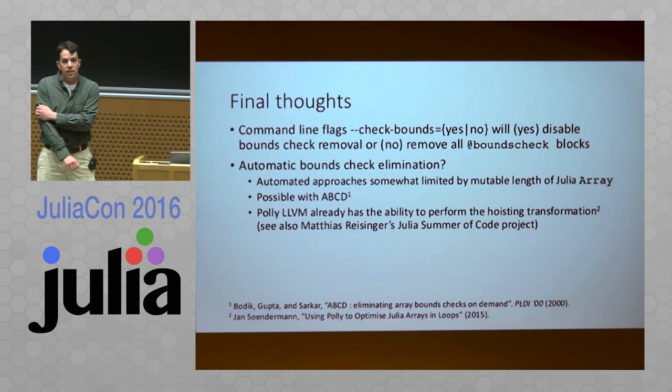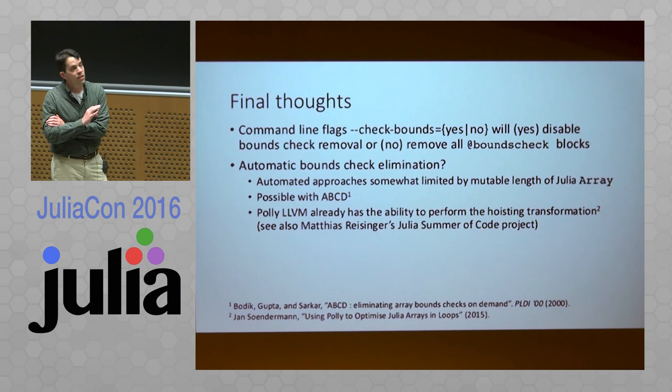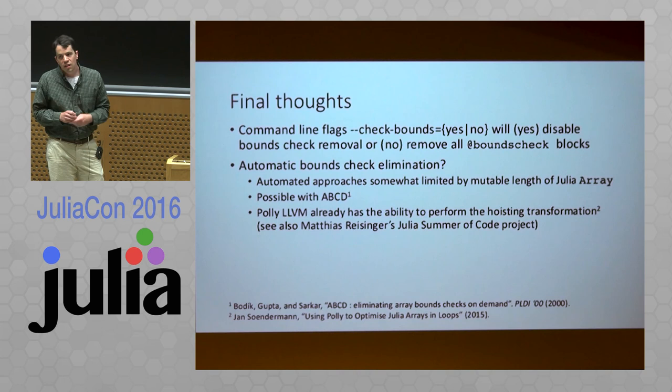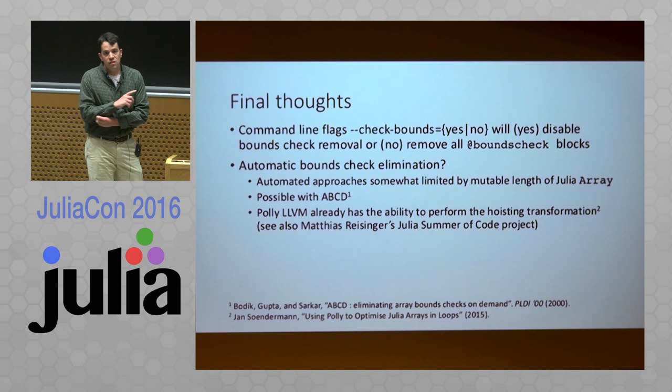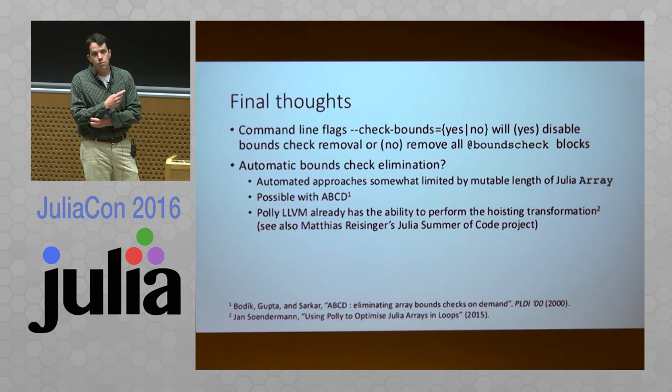Some final thoughts. There are command-line flags you can use to change the global behavior of bounds checking — you can set it to always on or always off. If you don't provide one of these flags, you get the behavior described with one-level-deep removal. In future versions of Julia we'd like to do some of this hoisting and marking automatically. We learned earlier that Parallel Accelerator can do some of this, and there's also a Julia Summer of Code project using tools built into LLVM's Polly project to infer places where hoisting can be done automatically. So that's something to look forward to.